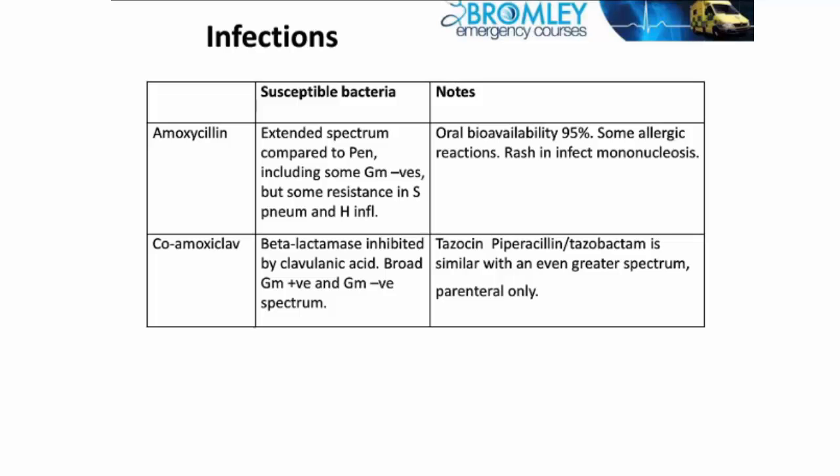But it's got a broader range, and so is effective against a number of respiratory organisms. Bioavailability is about 95%, so good absorption. There are some allergic reactions — in patients who've had recent Epstein-Barr infection, infectious mononucleosis, they're prone to getting a morbilliform type rash, a measles-like rash.